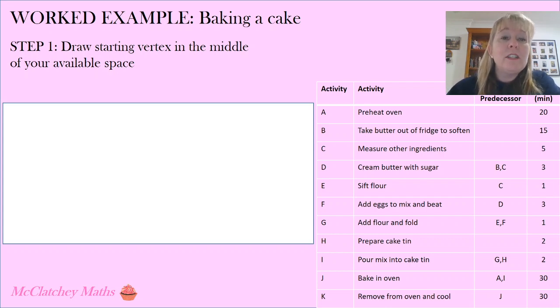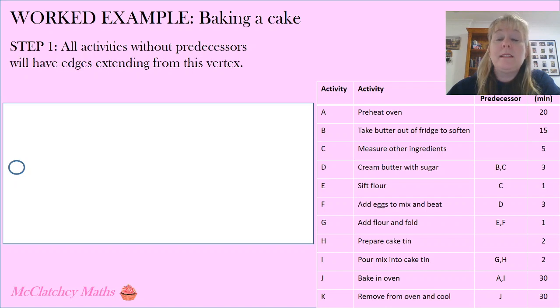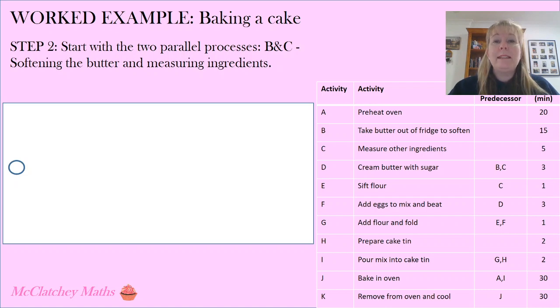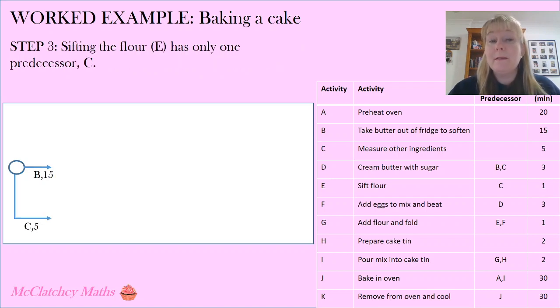So let's get started by drawing it. Our first step is we're going to draw that starting vertex in the middle of our available space on the left hand side. Step two we're going to have all our activities with no predecessors extending from that vertex. In this particular video I'm actually going to draw, because we've got a few of these activities that are going to come out of here A, B, C and H. So I'm going to leave some of those very simple activities, preheating the oven activity A and preparing the cake tin activity H till later on in the video once we've worked out where the space is going to be available. Put your more complicated activities and processes through the middle and then add your parallel edges later on. So let's start with B and C. They're our first two parallel processes. Softening the butter, measuring the ingredients. I'm going to move C down a little bit so I've got a bit more space.